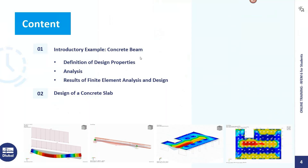At the beginning we will look at an introductory example of a concrete beam. We will model the beam, put the loads on it, look at the design properties needed for concrete design, and do the finite element analysis together with the concrete design. Afterwards we will look at the results of both the FE analysis and the concrete design. After this example, we will also look at a concrete slab and do the design for it as well. Now we will go to the program.